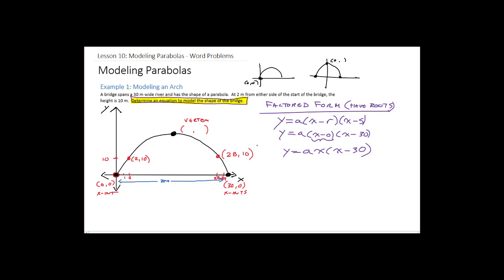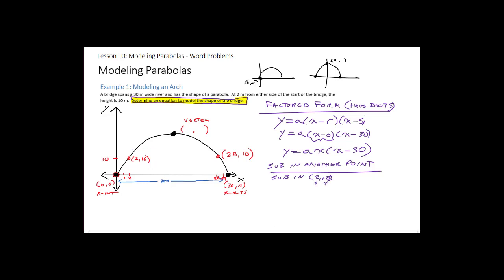Now we have to find what 'a' is. To do that, we take a point we haven't used and substitute it in. I'm going to use the point (2, 10). So: 10 = a(2)(2 − 30). That gives us 10 = a(2)(−28) = −56a. Dividing both sides by −56, we get a = −10/56, which reduces to a = −5/28.